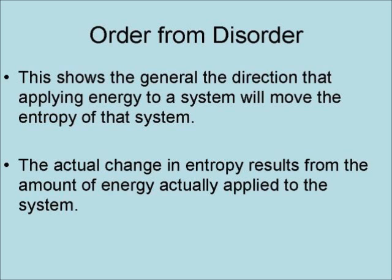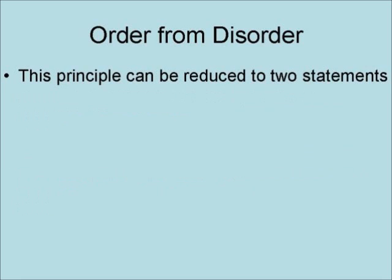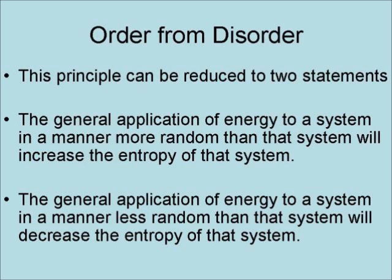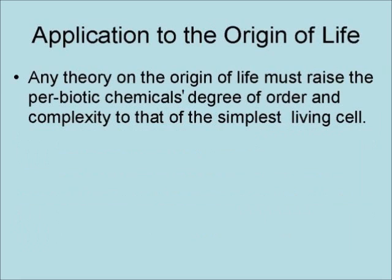The actual change in entropy results from the amount of energy actually applied to the system. This principle reduces to two statements: the general application of energy to a system in a manner more random than the system will increase the entropy of that system, and the general application of energy in a manner less random than that system will decrease the entropy of that system. Any theory on the origin of life must raise the prebiotic chemicals' degree of order and complexity to that of the simplest living cell.